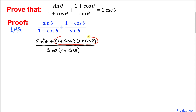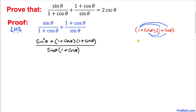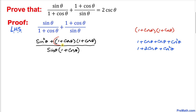Now let's focus on expanding 1 plus cosine of theta times 1 plus cosine of theta using the double distribution method. That gives us 1 plus cosine of theta plus cosine of theta plus cosine squared of theta. Combining like terms, we get 1 plus 2 cosine of theta plus cosine squared of theta.